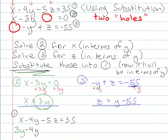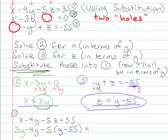I'll leave 4y alone, and then minus 5, and instead of z, I'm going to put what I know z to be, so that's y minus 55. So I've got that equals to 35.